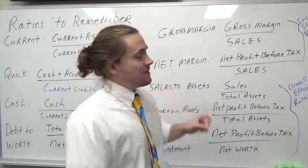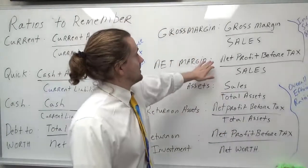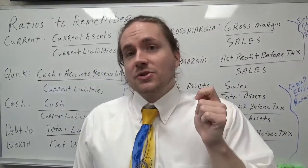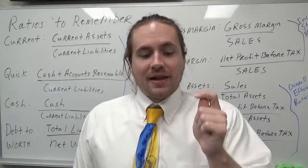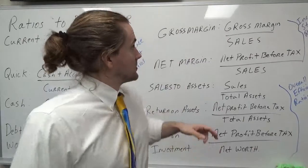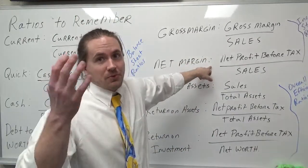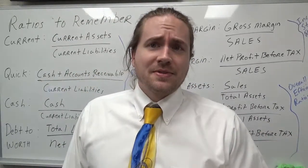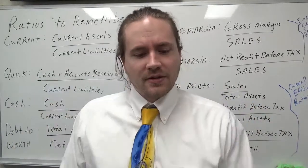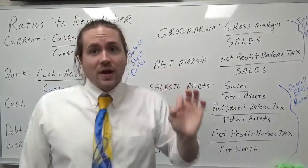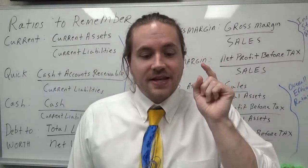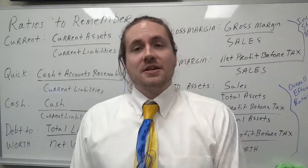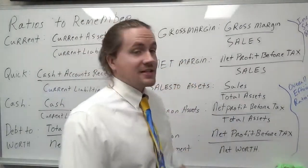Now let's look at net margin. Net margin takes the net profit before tax and divides that by sales — it measures profitability at the net profit level. So gross margin is how much you've made; net margin is after you've paid your employees and all that. Let's say my net margin ratio is 3%, meaning for every $1 that I sell, I produce 3% net margin, which in a lot of industries is not that abnormal.